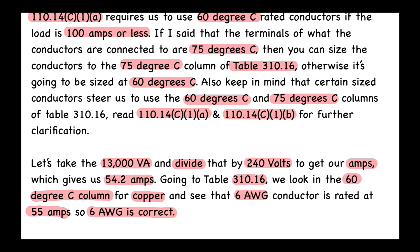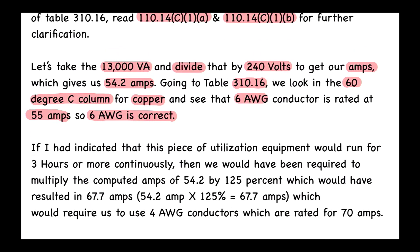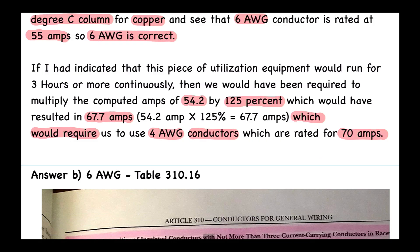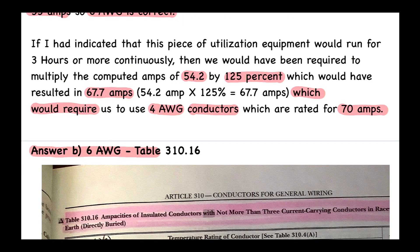If this equipment were to run continuously for three hours or more, we would be required to multiply the 54.2 amps by 125%, resulting in 67.7 amps. That would require a 4 AWG conductor, which is rated for 70 amps. But since it's non-continuous, the answer remains B — 6 AWG.